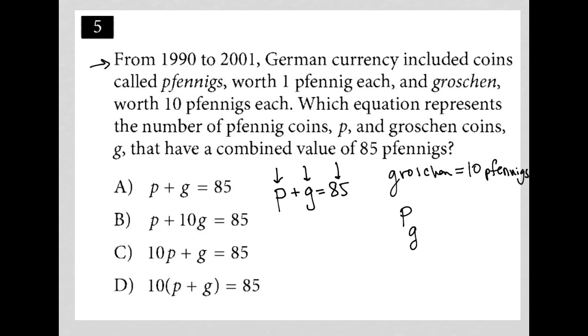So how do I convert that G into something that's pfennig-related, so that this equation even makes sense? So we are told that every one groschen is worth 10 pfennigs. So if I had three groschen, I really need to multiply that by 10 to get the value in terms of pfennigs.